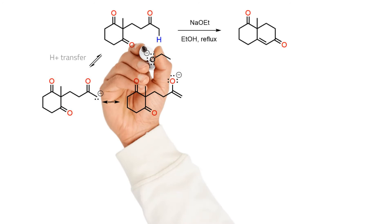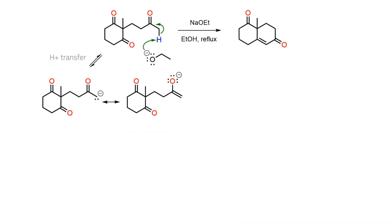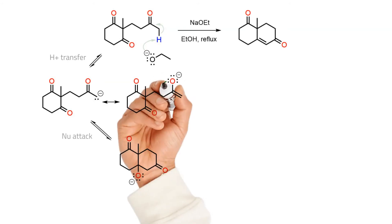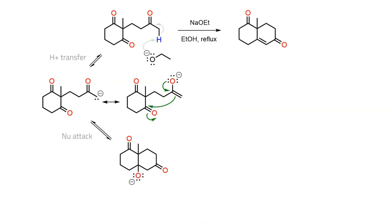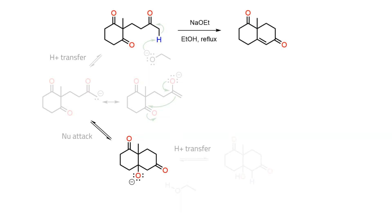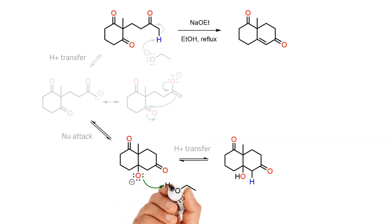In the first step, the alkoxide base is able to remove a proton from several alpha carbons; however, only one enolate will lead to a thermodynamically favored cyclization. Once formed, the enolate is able to undergo a fast intramolecular nucleophilic addition to give, in this case, a six-membered ring. Since a polar protic solvent is used, a rapid proton transfer occurs.